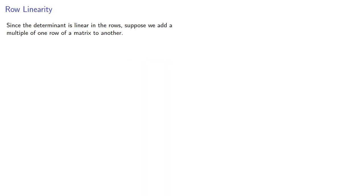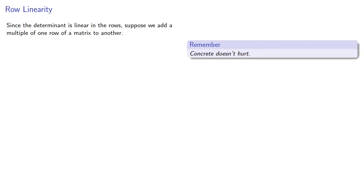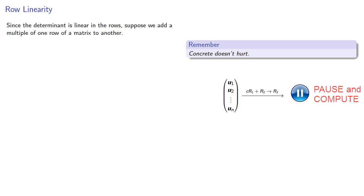Since the determinant is linear in the rows, suppose we add a multiple of one row of a matrix to another. Let's imagine our matrix being given by presenting its row vectors, and let's say we add a multiple of row one to row two — then our matrix becomes...